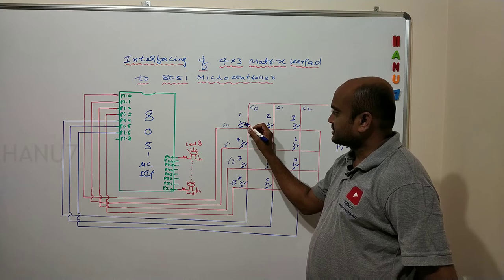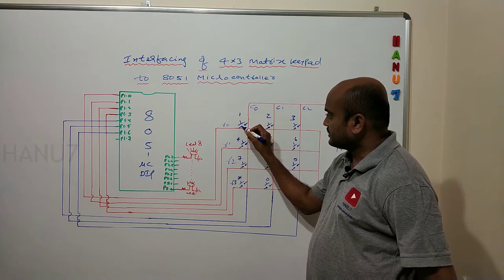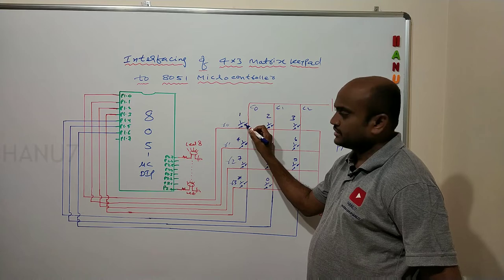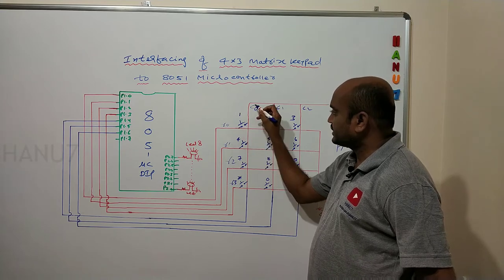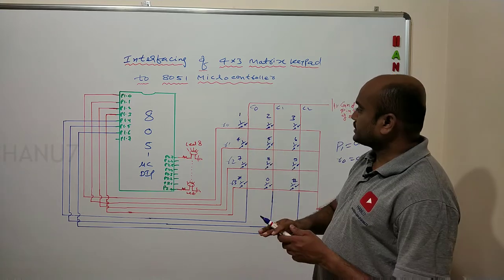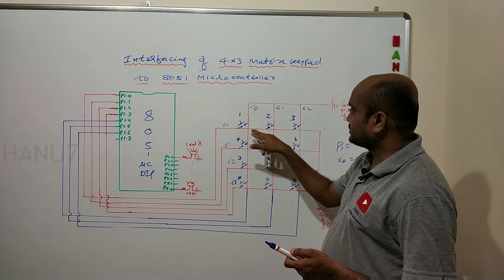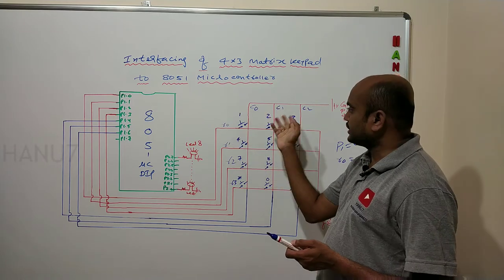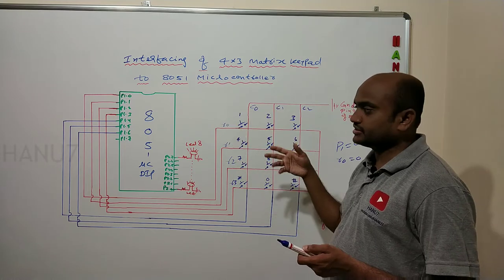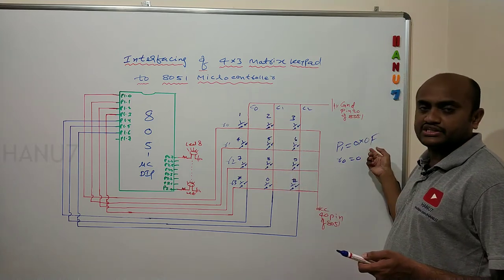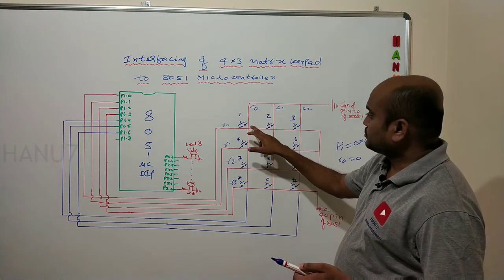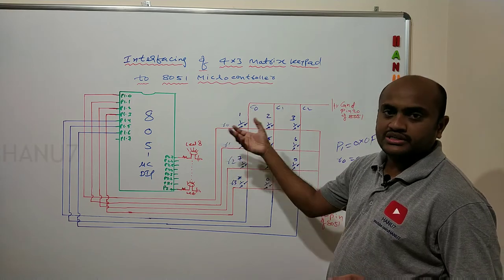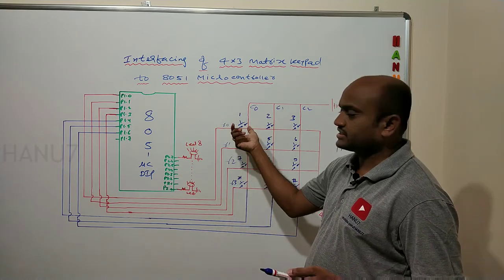When a key is pressed, you can observe the key arrangement - it will make contact between these two terminals. This column and this row will get shorted. So voltage will flow from R0 to column 0, or in reverse from column 0 to R0, according to the configuration we made, either F0 or 0F. Because of that voltage flowing from row to column, the microcontroller will sense that this key is pressed.